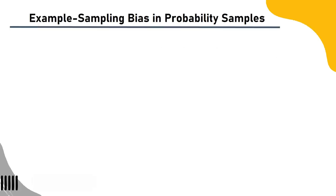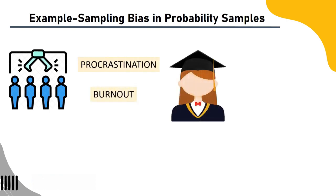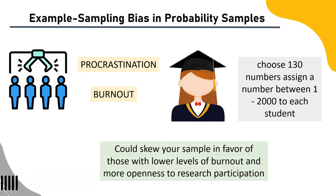Example of sampling bias in probability samples: Using a straightforward random sample, you want to examine the levels of procrastination and burnout among graduate students at your university. Using a random number generator, you choose 130 numbers assigned between 1 and 2000 from a database of research participants. Despite using a random sample, not all graduate students had a chance of being chosen — anyone who did not opt in to be contacted about research is excluded, which could skew your sample toward those with lower burnout and more openness to research participation.